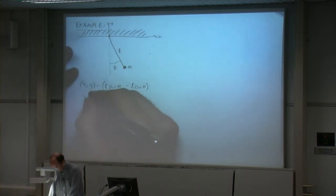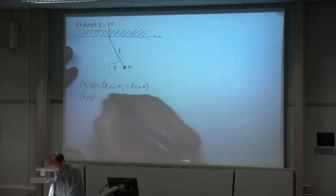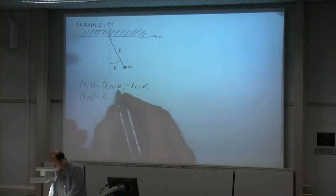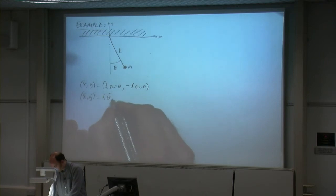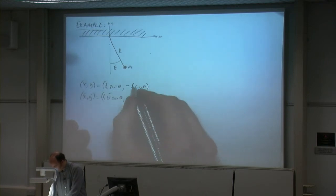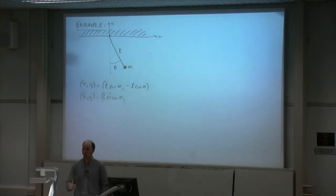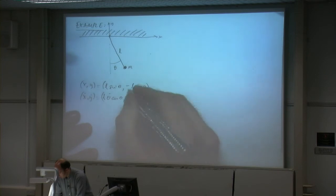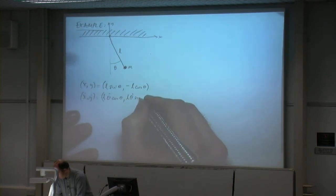To find x-dot and y-dot — the velocities — it's relatively straightforward. L doesn't vary with time, so that stays as a constant. We get x-dot = L theta-dot cosine theta. And then cosine differentiates to minus sine, so that becomes a plus: y-dot = L theta-dot sine theta.